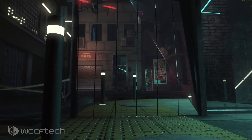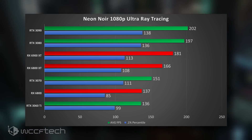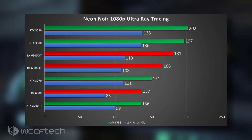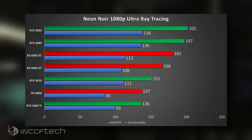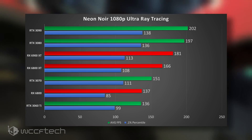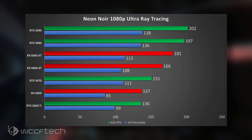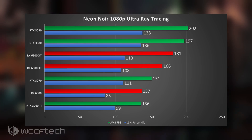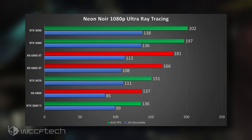Starting things off at 1080p: the 3060 Ti sits at the bottom, which is expected as the least expensive card at $399. Interestingly, it has better 1% percentiles than the 6800 and fell just one FPS short on average. The 3070 is a little bit faster — a 10-plus percent jump on the 1% percentiles — and sat just behind the 6800 XT. At the 3080, it bested the 6900 XT in this title, and the 3090 appears CPU constrained, only marginally better than the 3080.